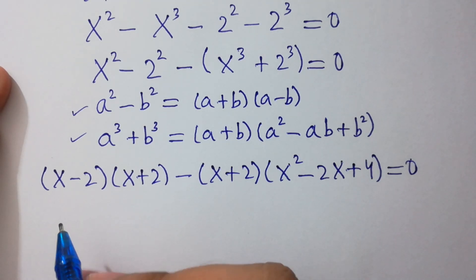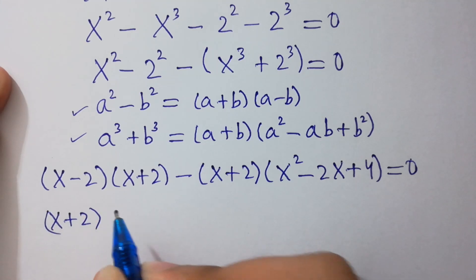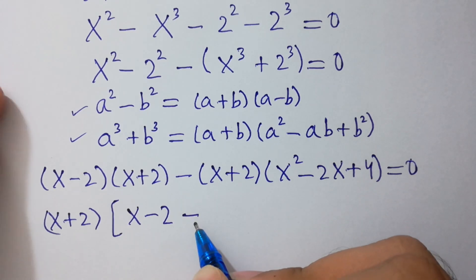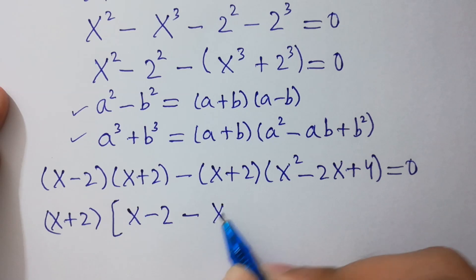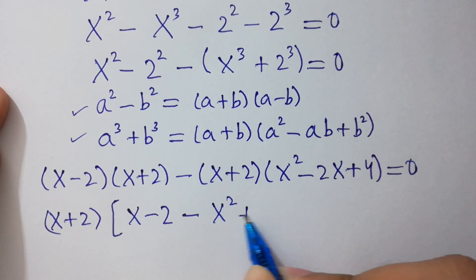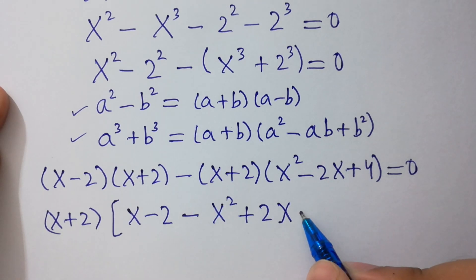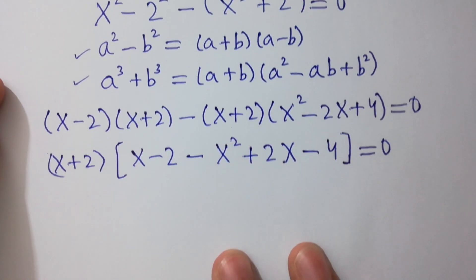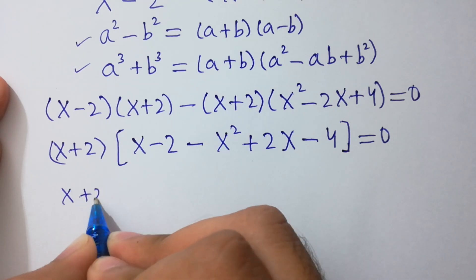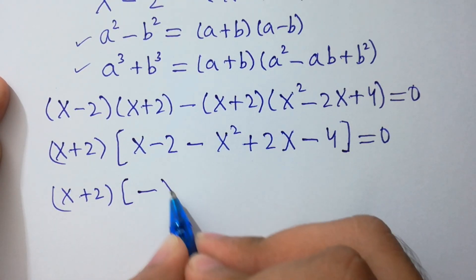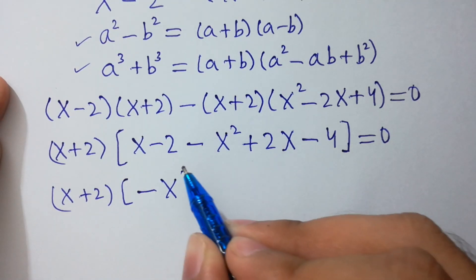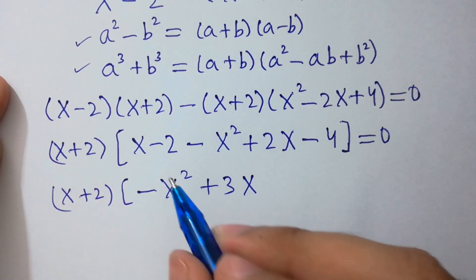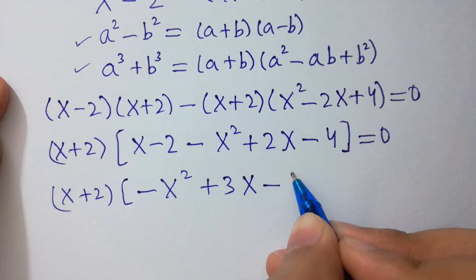So we can factor out the common value (x plus 2). We have (x minus 2) minus x squared plus 2x plus x minus 4, equals 0. Simplifying further, we have (x plus 2) and here minus x squared plus 3x minus 6, equals 0.